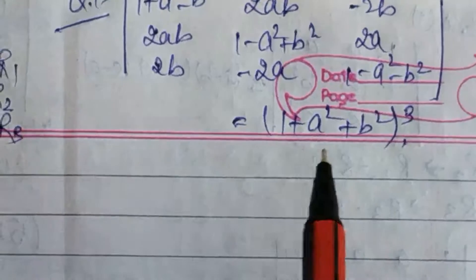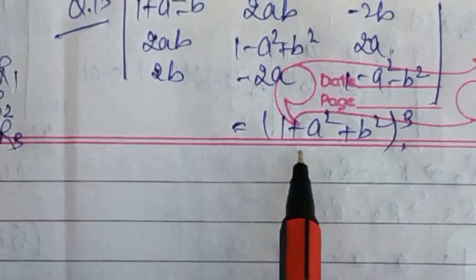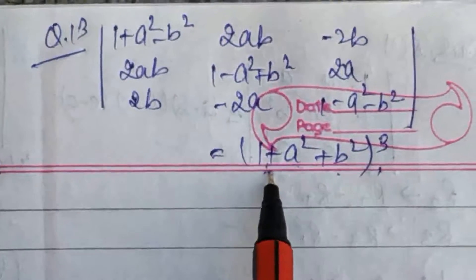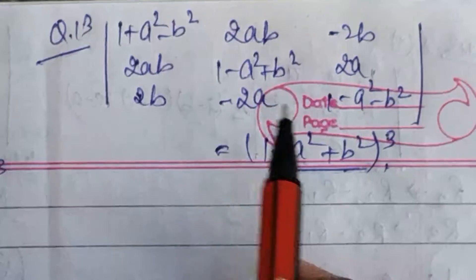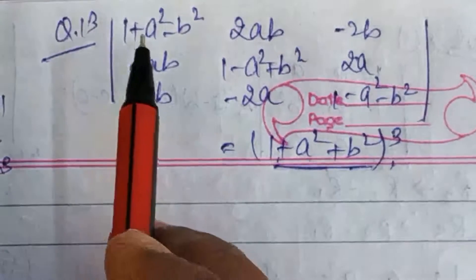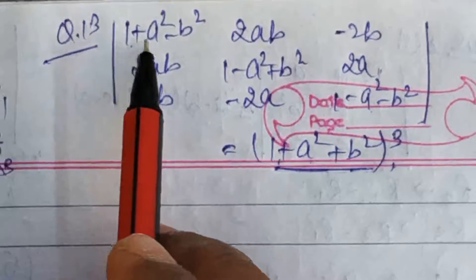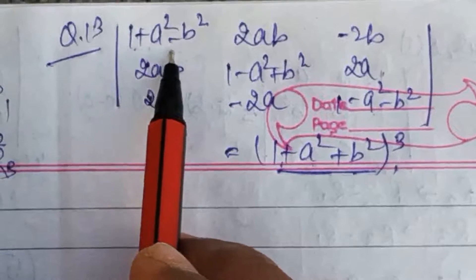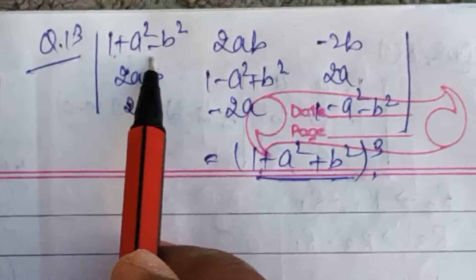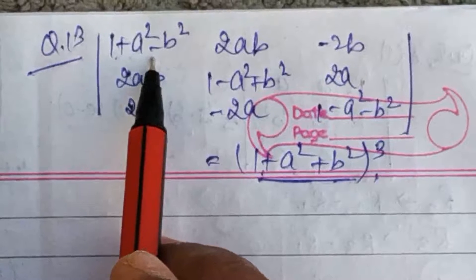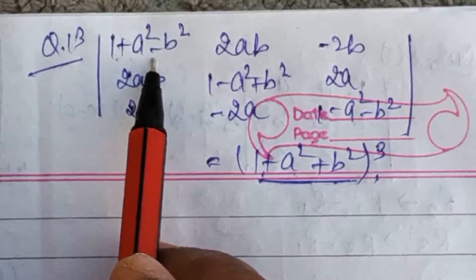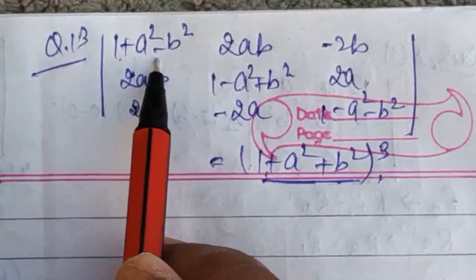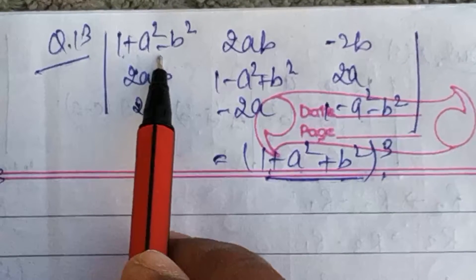तो अब देखते हैं हमें prove करना है (1 plus a square plus b square) whole cube। यह हमको लेकर आनी है अपने इस determinant को solve करके। तो अभी हम यहाँ देख रहे हैं कि 1 plus a square तो हमारी पास में है, but plus b square नहीं है — उसकी जगह पर यहाँ minus b square है।